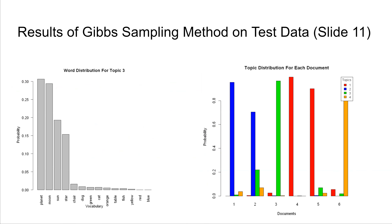We now present a run of the Gibbs sampling method on the corpus we generated for the earlier example to see how the method performs. The Gibbs sampling method performs quite well. On the left, we show a plot of the distribution of words for a topic outputted by Gibbs sampling, where planet, moon, sun, and star are the top words — so this topic is the astronomy-themed topic. On the right, we plot the distribution of topics for each document, and the outputted distribution is quite similar to the true distribution.